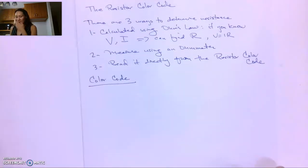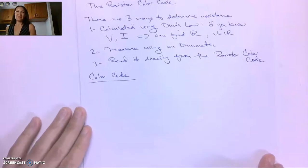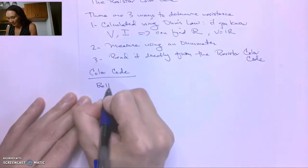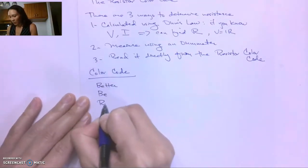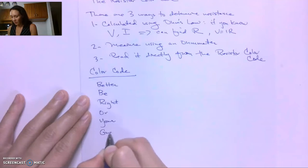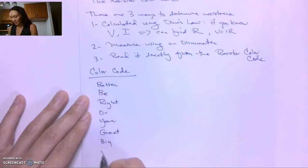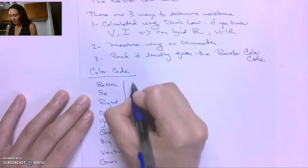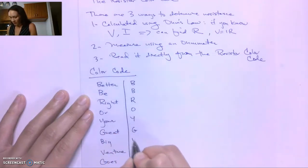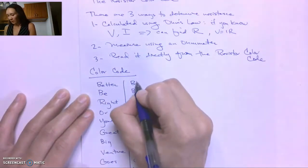The color code has a clever mnemonic device. The one I know is: 'Better Be Right Or Your Great Big Values Go Wrong.' The letters here are B, B, R, O, Y, G, B, V, G, and W, and these correspond to colors — the color bands on the resistors.